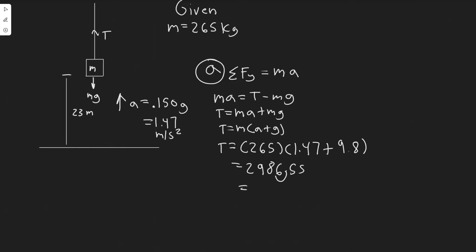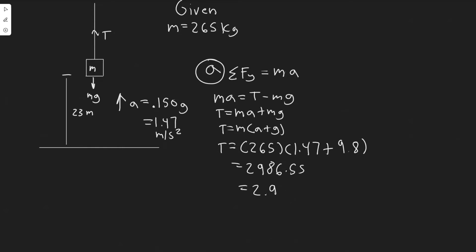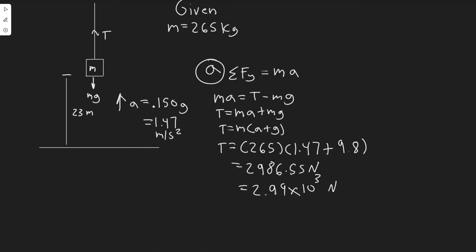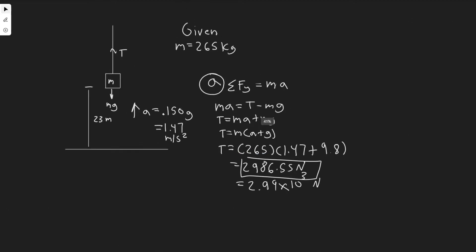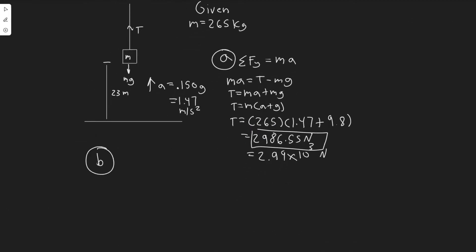Rounding that, the tension is approximately 2.99 times 10 to the 3 newtons, or about 2,990 newtons. We're dealing with tension, which is a force, so units are newtons. You can round however you'd like. Let's move on to B.